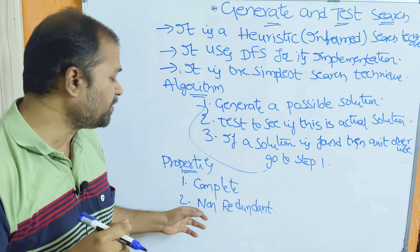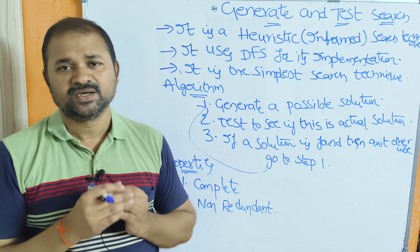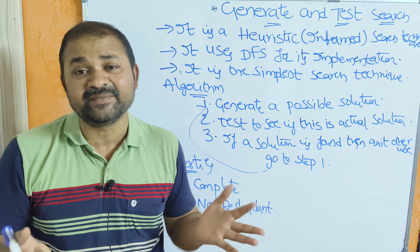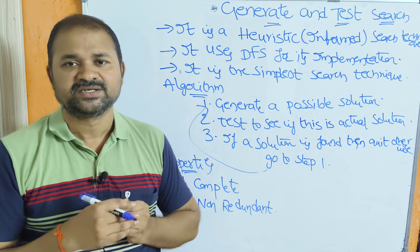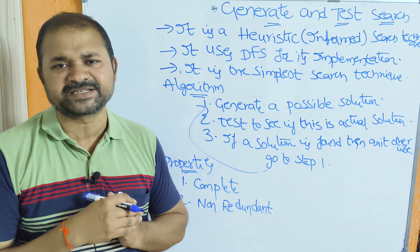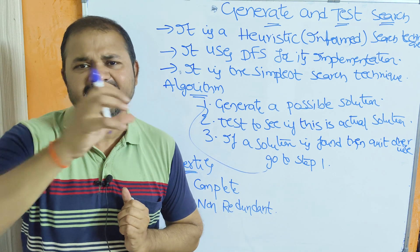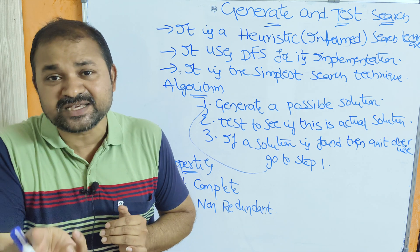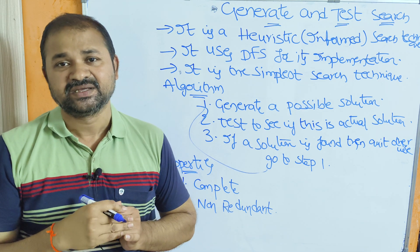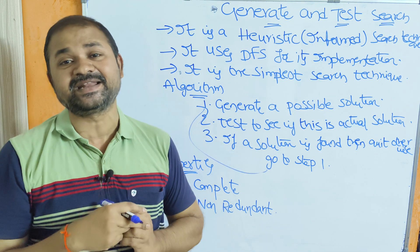Second property, it is non-redundant. We know about redundant. Redundant means duplication. But the generator is non-redundant, which means it does not produce any duplication solutions. Suppose if it produces duplication solutions, then the time complexity will increase.